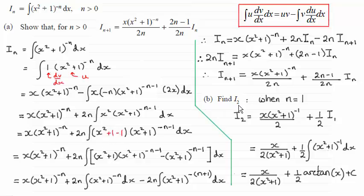Now in part b, we had to find I₂, so all you need to do is set n equal to 1. When you set n equal to 1 in here, you get I₂ equals x times (x² + 1)^(-1) over 2. And then for this term here, that's just going to come out at a half. Half I₁.